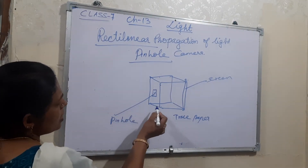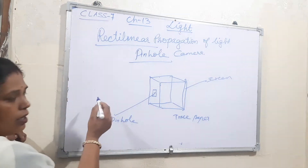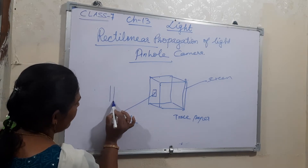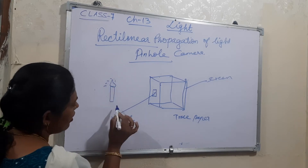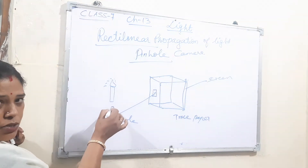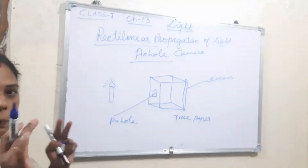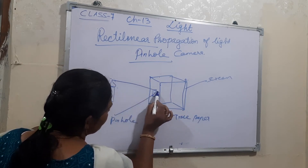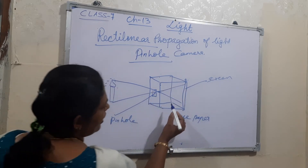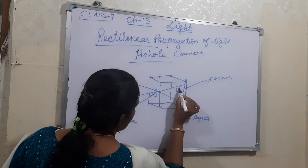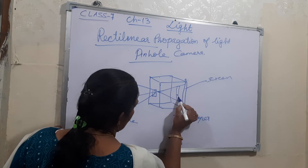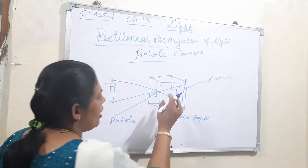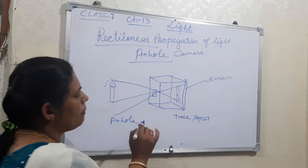Keep the pinhole side facing outside toward a candle or a tree. Keep it in a dark room so that the light comes through the pinhole. If you look at the trace paper screen, you will get the image of the candle, but it will be inverted — that means upside down. You will get a small inverted image on the screen.